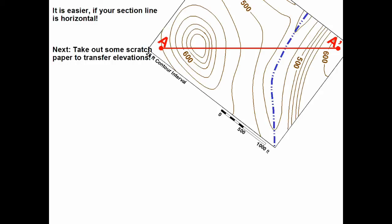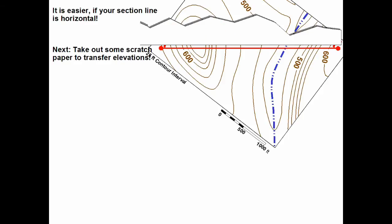We need to take some scratch paper and carefully fix it to the map along the section line so we can transfer our elevation points. A piece of scratch paper works fine and now everywhere where my section line crosses an elevation line I'll put a tick mark and mark the elevations on my scratch paper.